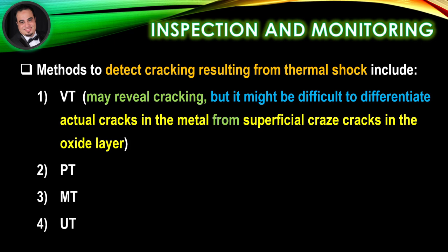Methods to detect cracking resulting from thermal shock include: visual testing, which may reveal cracking, but it might be difficult to differentiate actual cracks in the metal from superficial craze cracks in the oxide layer. Other methods include liquid penetrant testing, magnetic particle testing, and ultrasonic testing.